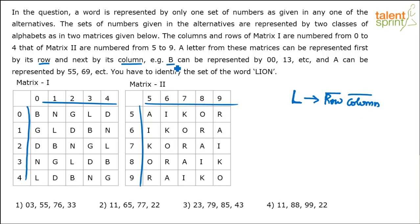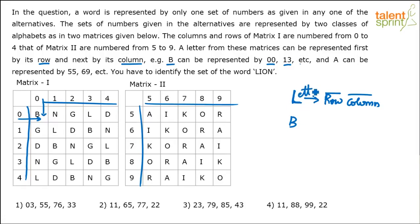For example, B can be represented as 00, 13, etc. B is in the first matrix. B is at the 0th row and 0th column, so B can be taken as 00. Where else do we have B? B is at the 1st row and 3rd column, so it can be taken as 13. B is also at the 2nd row and 1st column, so it can be taken as 21, and so on.